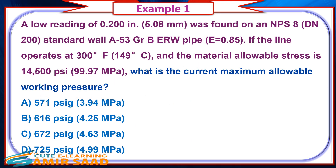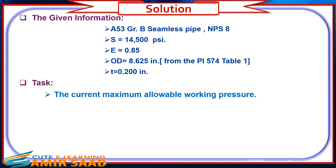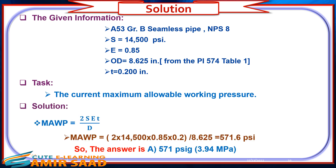Example 1: A low reading of 0.200 inch was found on a nominal pipe size 8 standard wall A53 Grade B electric resistance welding pipe with longitudinal quality factor E equals 0.85. If the line operates at 300 degrees Fahrenheit and the material allowable stress is 14,500 PSI, what is the current maximum allowable working pressure? Solution: MAWP equals 2SET divided by D. Plugging in the given information, the answer is 571 PSI.